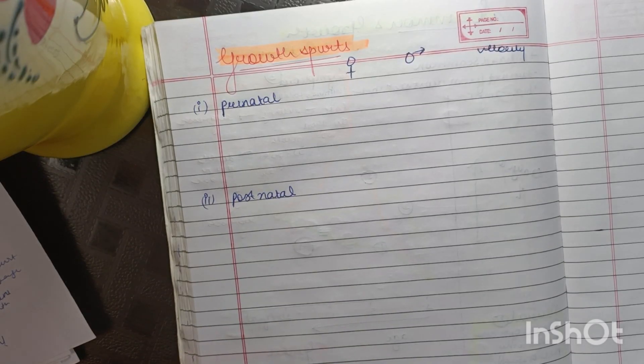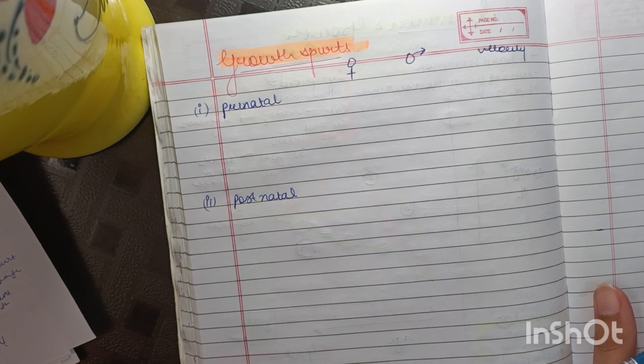In this video, I'll teach you an easy way to remember all the growth spurts for orthodontics. First of all, there are basically two phases: prenatal and postnatal.